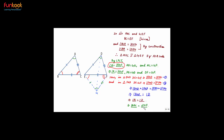We have proved that angle A, which is angle BAC, is equal to angle D, which is angle EDF. After proving these angles equal, we can easily prove that triangle ABC is congruent to triangle DEF by SAS: BA is equal to ED (given), AC is equal to DF (given), and angle A is equal to angle D (proved). In other words, if in two triangles all three corresponding pairs of sides are equal, then they are congruent — so we have proved the SSS congruency rule.